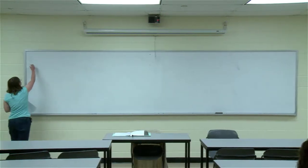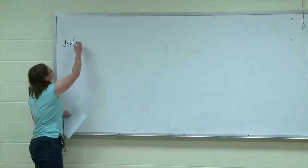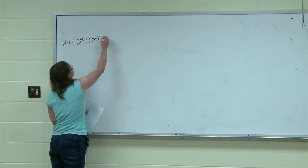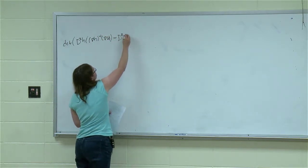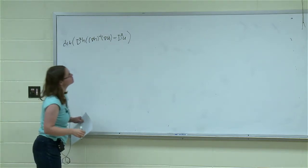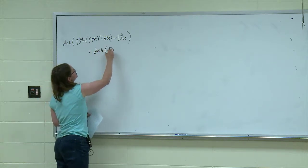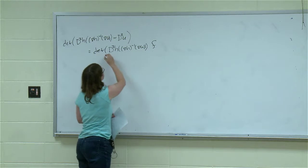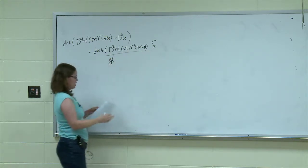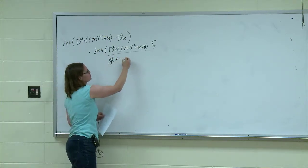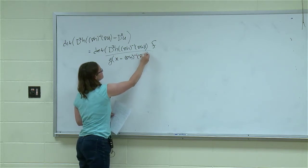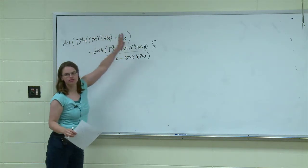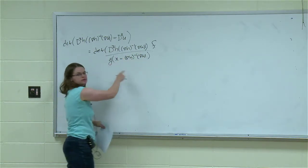Let me just remind you what the PDE was. It was that the determinant of the Hessian of h — h was our cost function — evaluated at grad h inverse of grad u, minus d squared u, was equal to the determinant of d squared h, again evaluated at this point, times f divided by g. And now we put our map in here, and our map was x minus grad h inverse of grad u. And then we had the condition that this matrix is positive semi-definite.